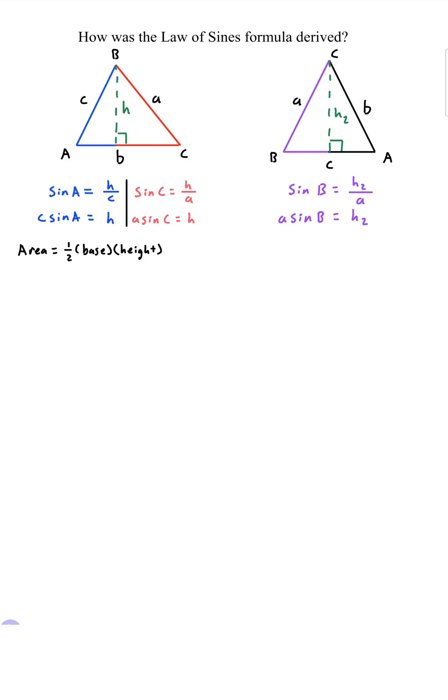Now the area of a triangle is one half base times height so if we use the blue part the blue height then we have one half times the base b times the height c sine of A. At the same time if we use the height from the red part we have one half times base b times the height a sine of C.